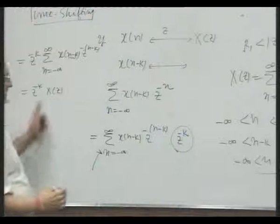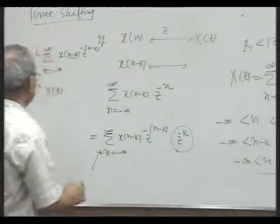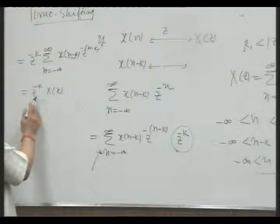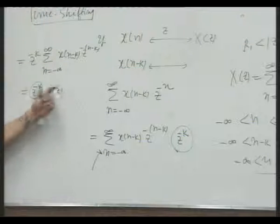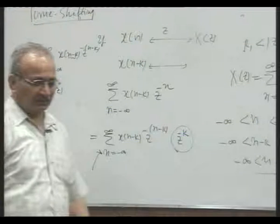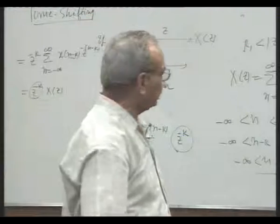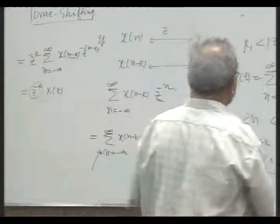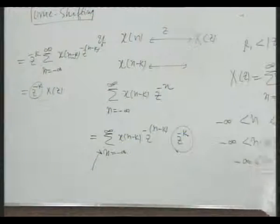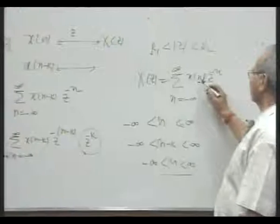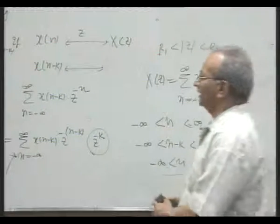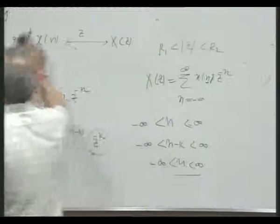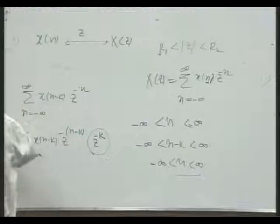The ROC of this will possibly be modified because of the presence of this factor. To lay stress on this: if x is a function of n with exponent minus n, then n gets replaced by z and we get X(z). Let us use this idea to find out the z-transform of some simple functions.